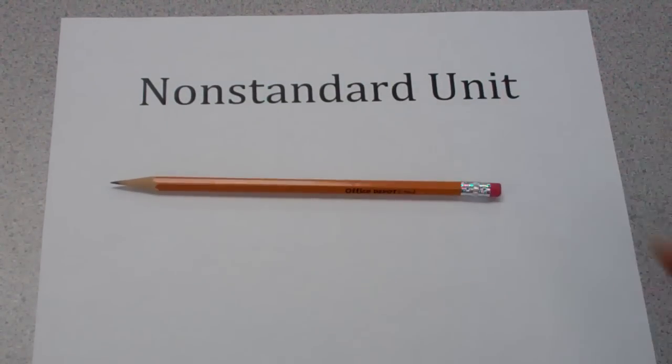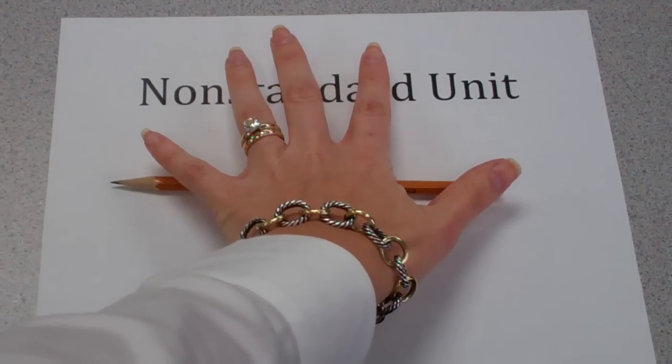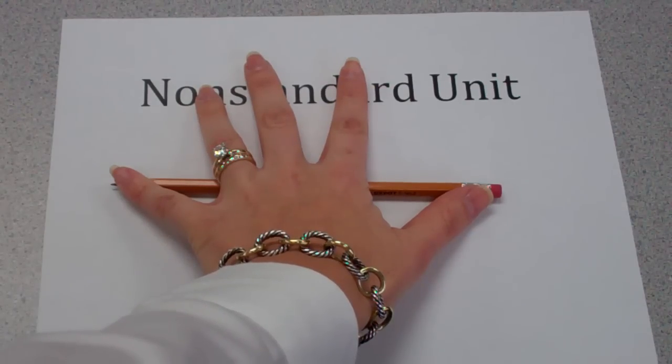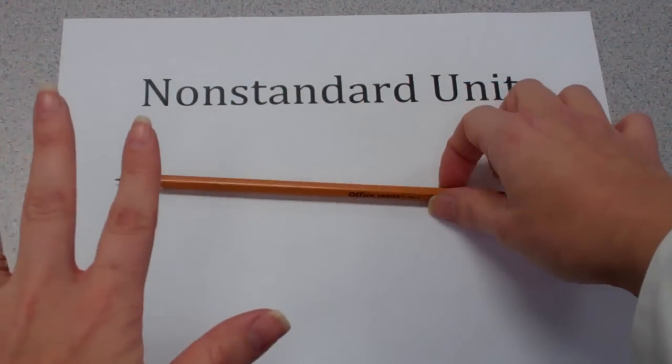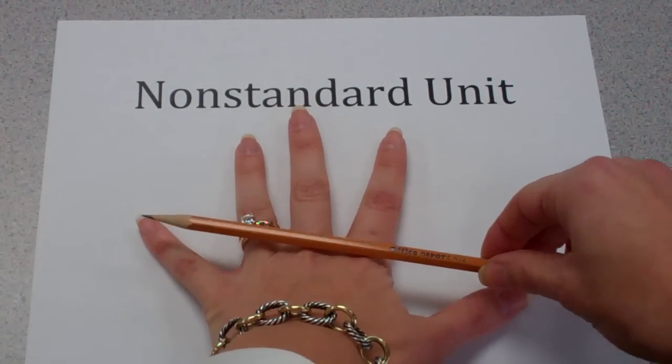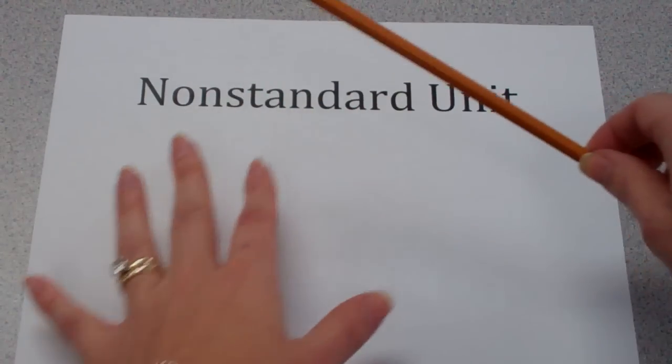For example, if I were wanting to find the length of this pencil, I might use my hand as a non-standard unit by saying it's about as long as my hand. My hand is definitely a non-standard unit because your hand might be a different size than my hand, but it just so happens that this pencil is about the length of my hand.